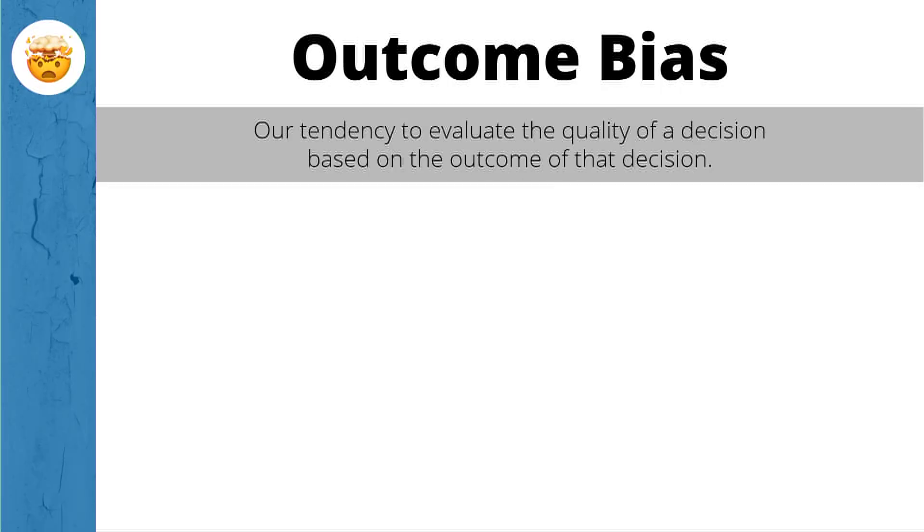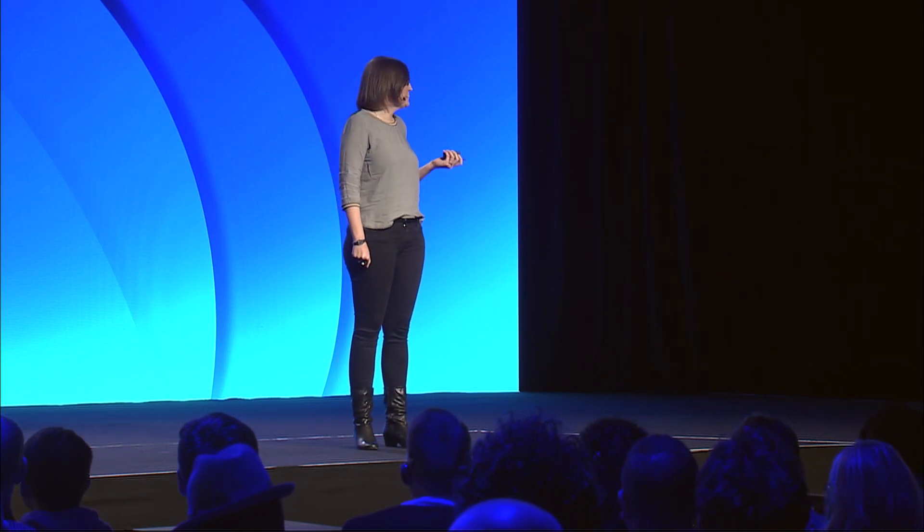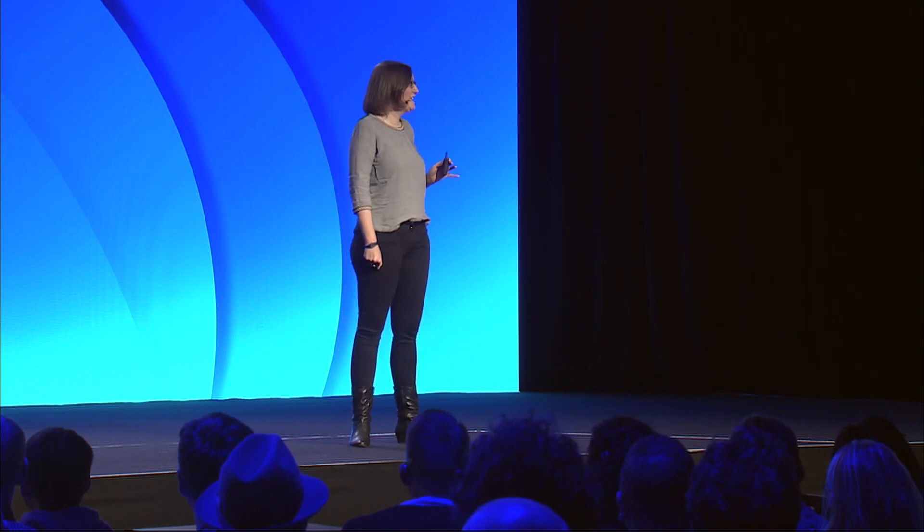Outcome bias is our tendency to evaluate the quality of a decision based on the outcome of that decision. Three or four years ago, I was on a team that was using React for the first time, and we were looking for a framework to implement the flux pattern with React. For those in front-end development, you might be aware that these days Redux is basically the de facto standard to do that. But at the time, there was another alternative called Reflux.js — a very unfortunate name; maybe that should have been a sign for us. We were evaluating those two things, trying them both out, and we actually liked Reflux better, so we started using that.